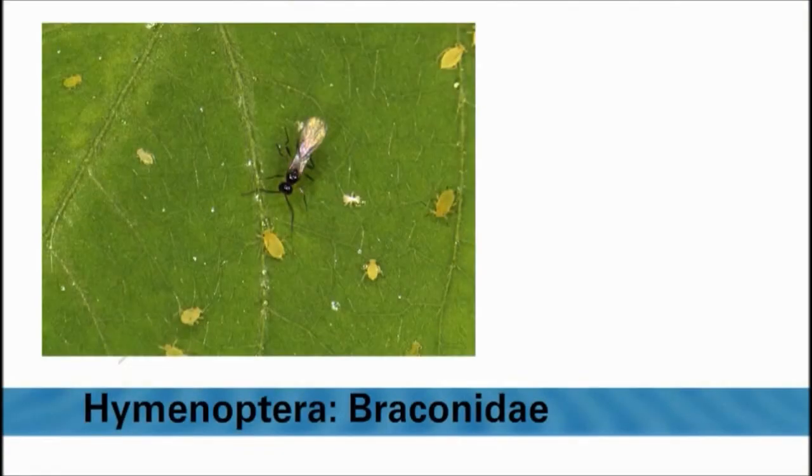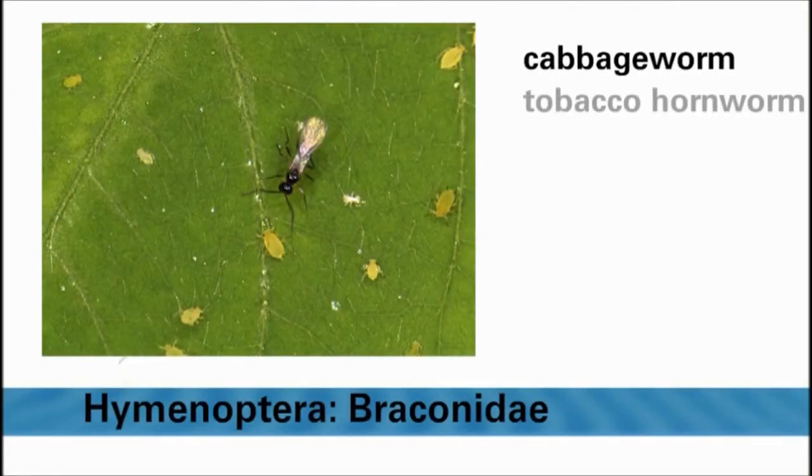In addition to aphids, Braconid species attack caterpillars such as the imported cabbage worm and tobacco hornworm.